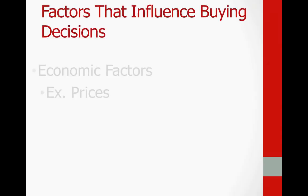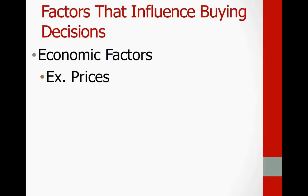We're going to lead into the factors that influence our buying decisions, and there are three. The first is economic factors: looking at prices, quality, brand name, and warranty. For example, I bought headlights from a company in California. What really sold me was their warranty — if I had any issues, they would handle shipping and handling and ship me free headlights for life.